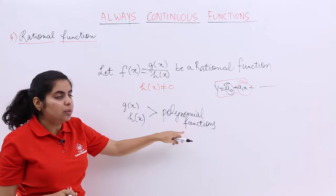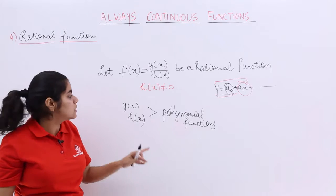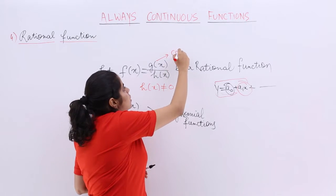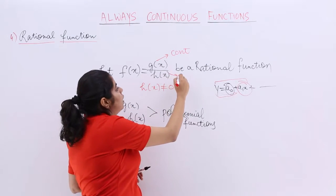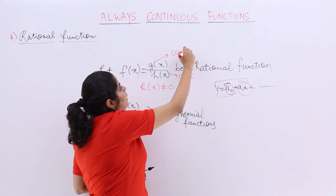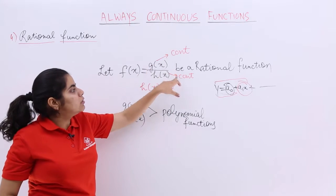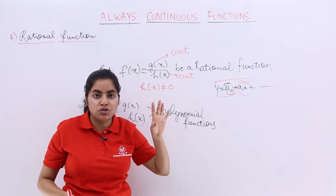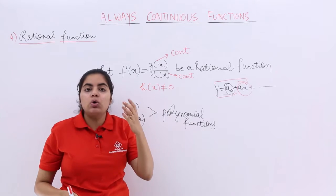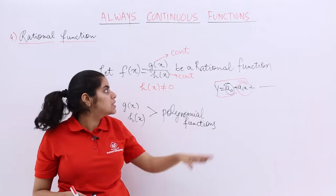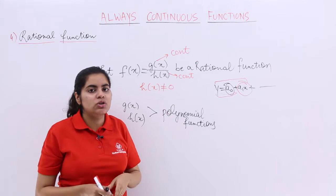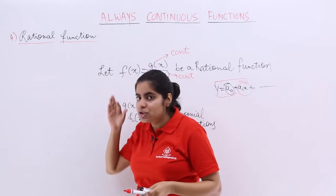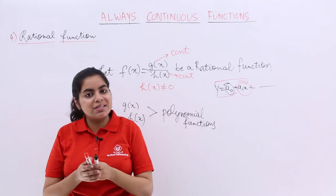Why? Because polynomial functions are continuous. g(x), h(x)—g(x) is a polynomial function, so continuous. h(x) is a polynomial function, so continuous. So continuous upon continuous means, as we studied in the algebra of continuous functions, that the quotient of continuous functions is also continuous. Hence, my rational function is continuous everywhere.